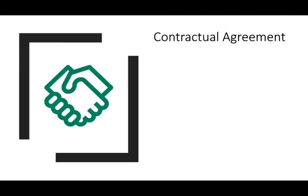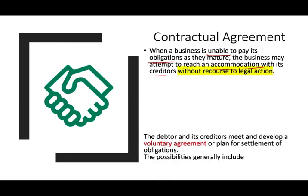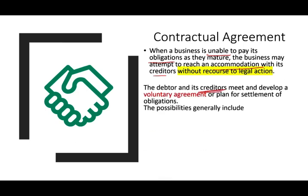Let's talk about contractual agreement and when we have to deal with this type of situation. The prerequisite for bankruptcy is when a business is unable to pay its debt and obligations. When a business is unable to pay its obligations, it may attempt first to reach an accommodation with creditors. The debtor and the creditor — the creditor is the party that lent the money, the debtor borrowed it — meet and develop a voluntary agreement.